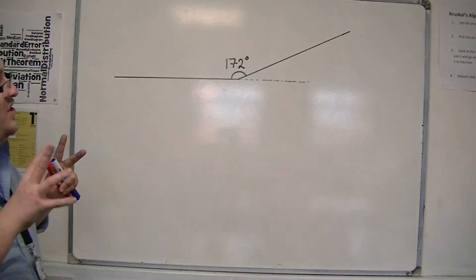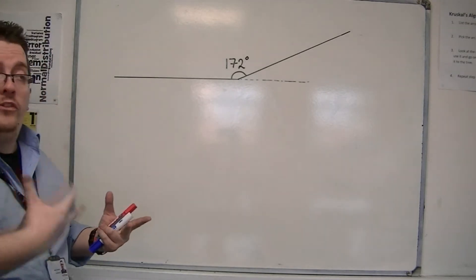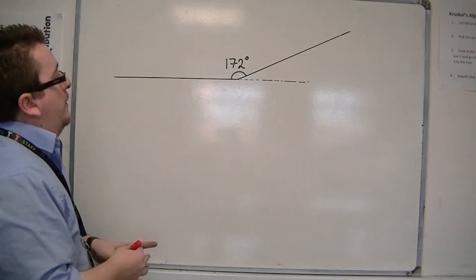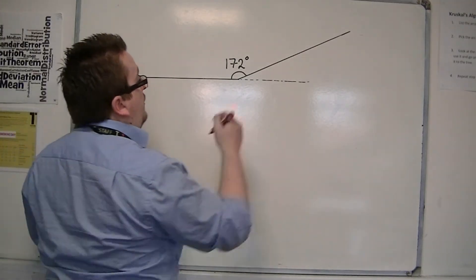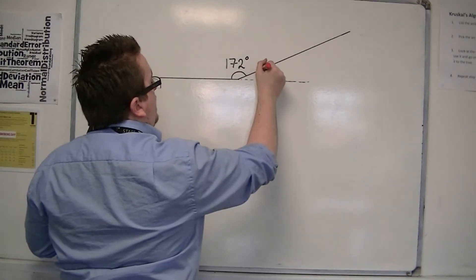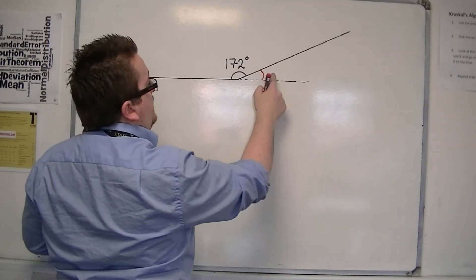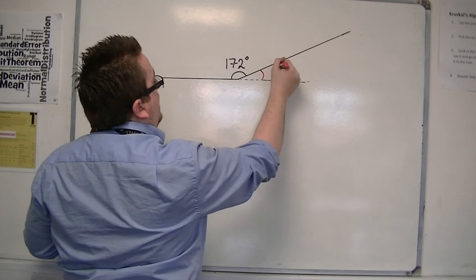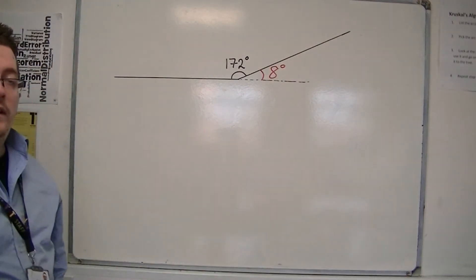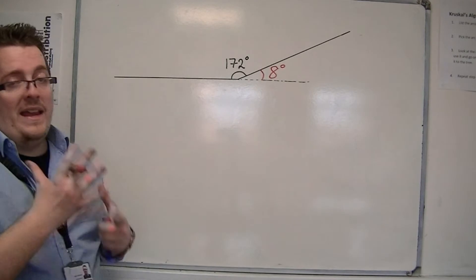We can find that out once we've found the exterior angle. These two angles lie on a straight line and must add up to 180. So this missing angle would have to be 8 degrees. So the exterior angle is 8.